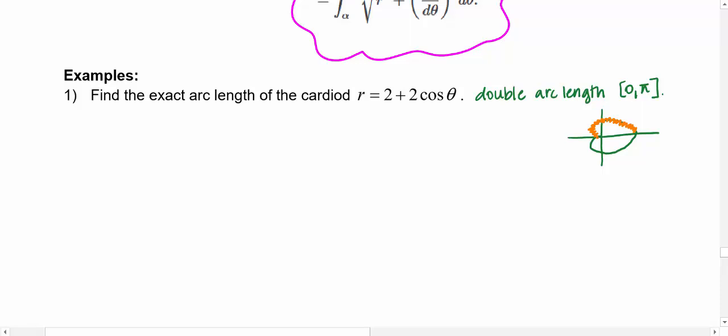So the other thing I'd like to do is if I have my equation for r in terms of theta, or r is a function of theta, I would also like to have dr d theta ready to go into my arc length formula. So dr d theta should just be negative 2 sine theta. So let's go ahead and put this in the arc length formula.